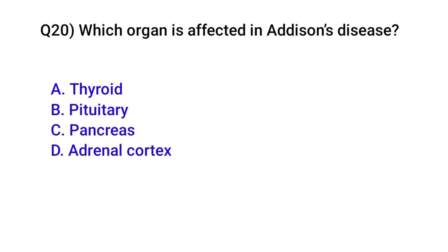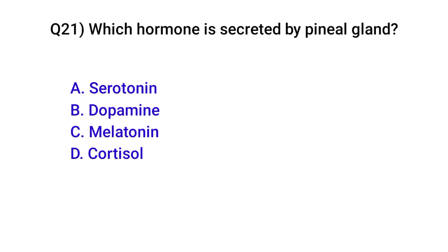Question number twenty: Which organ is affected in Addison's disease? Correct option is: Adrenal cortex. Question number twenty-one: Which hormone is secreted by the pineal gland? Correct option is C: Melatonin.